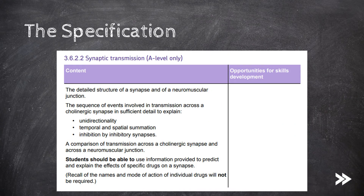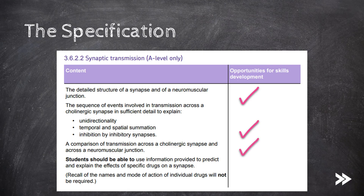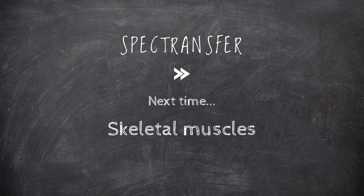Great, that would be synaptic transmission covered. We've covered the detailed structure of a synapse and of a neuromuscular junction, the sequence of events involved in transmission across a cholinergic synapse in sufficient detail to explain unidirectionality, temporal and spatial summation, and inhibition by inhibitory synapses. We've also compared transmission across cholinergic synapses and neuromuscular junctions, and considered some of the effects that drugs may have on synapses. That would be it for now guys, thanks for watching — next time we will be covering skeletal muscles, how they are stimulated to contract by nerves, and act as effectors.